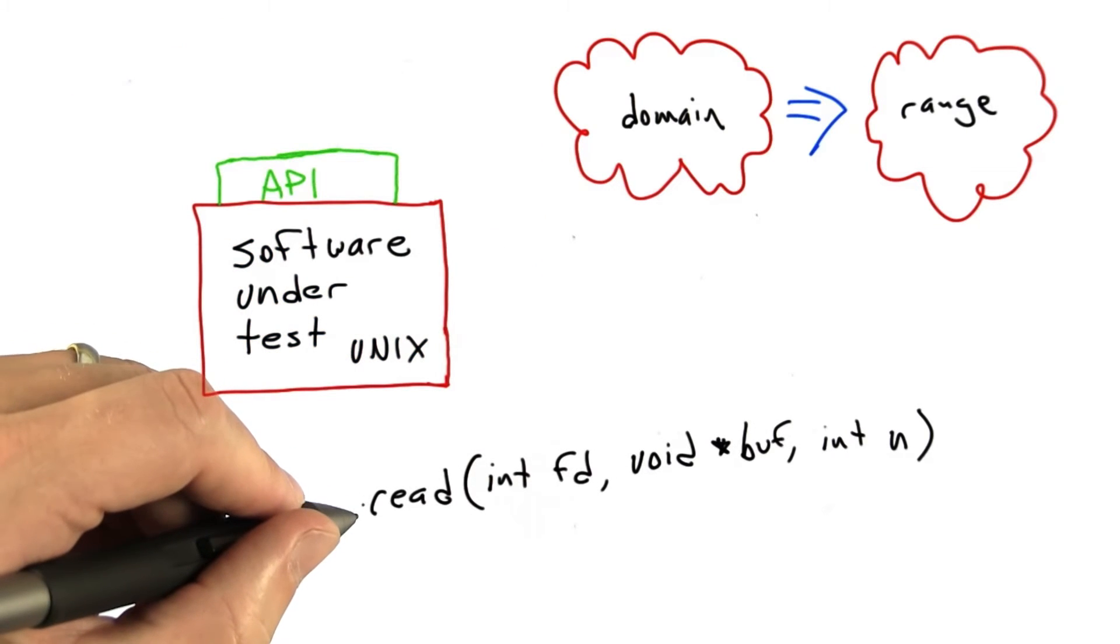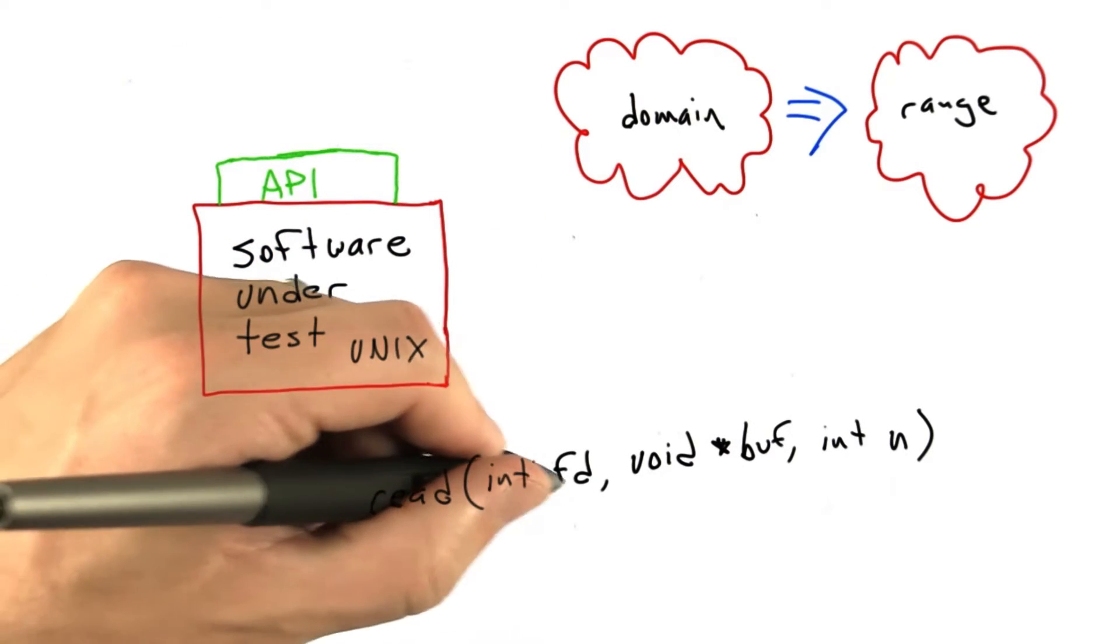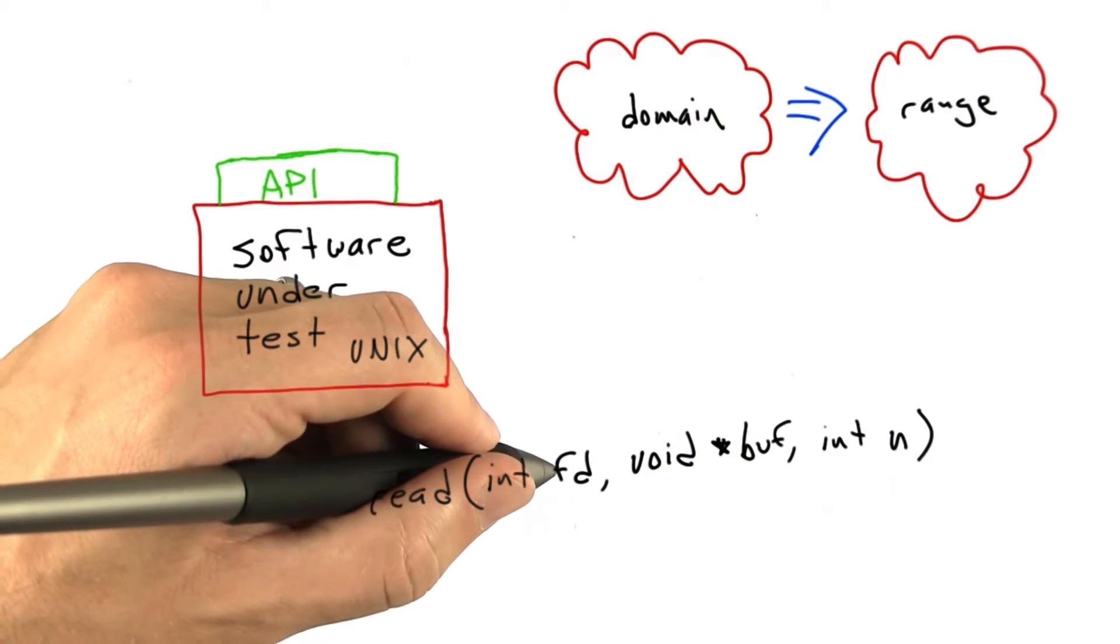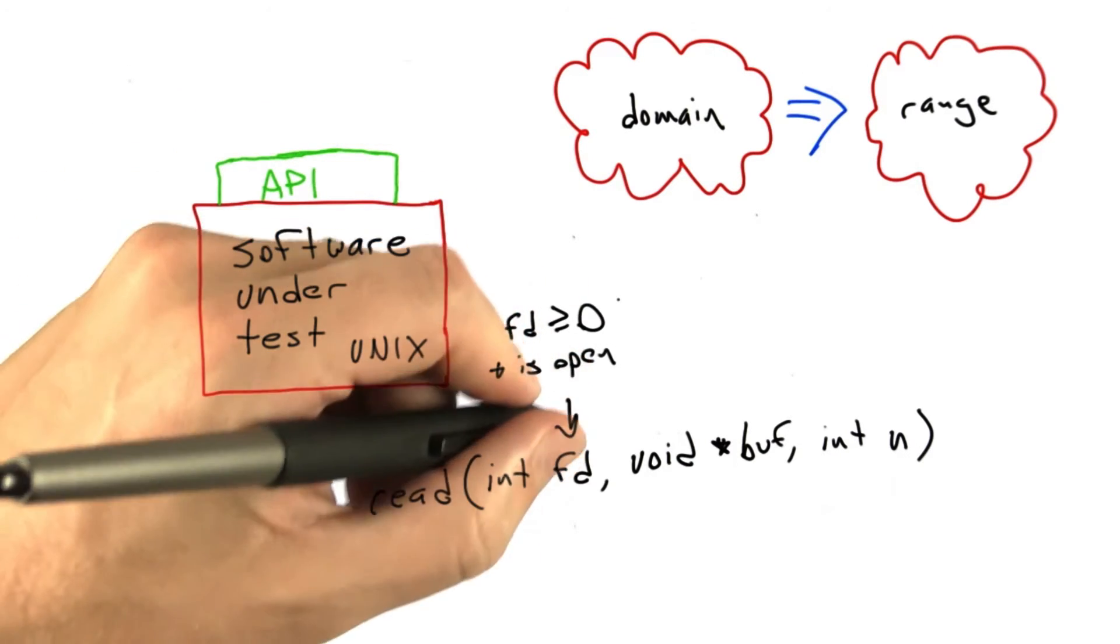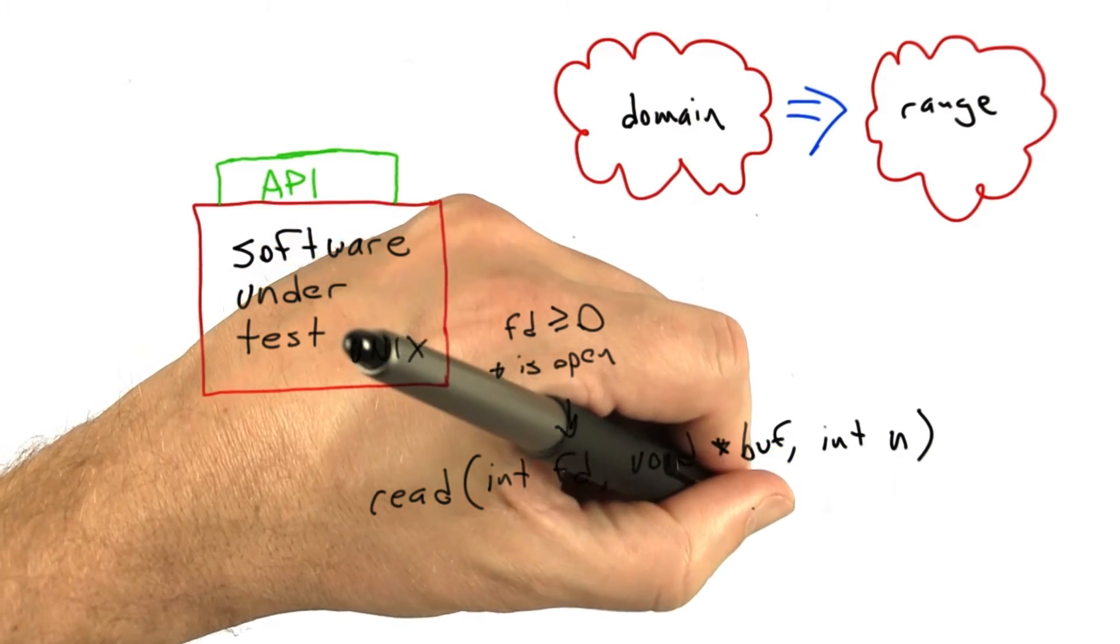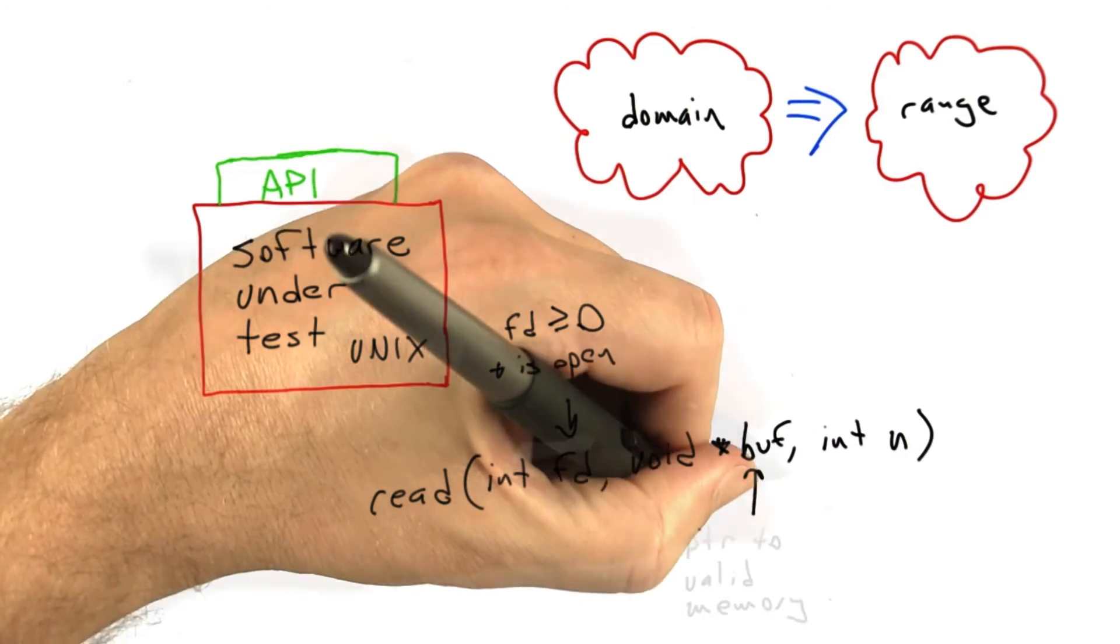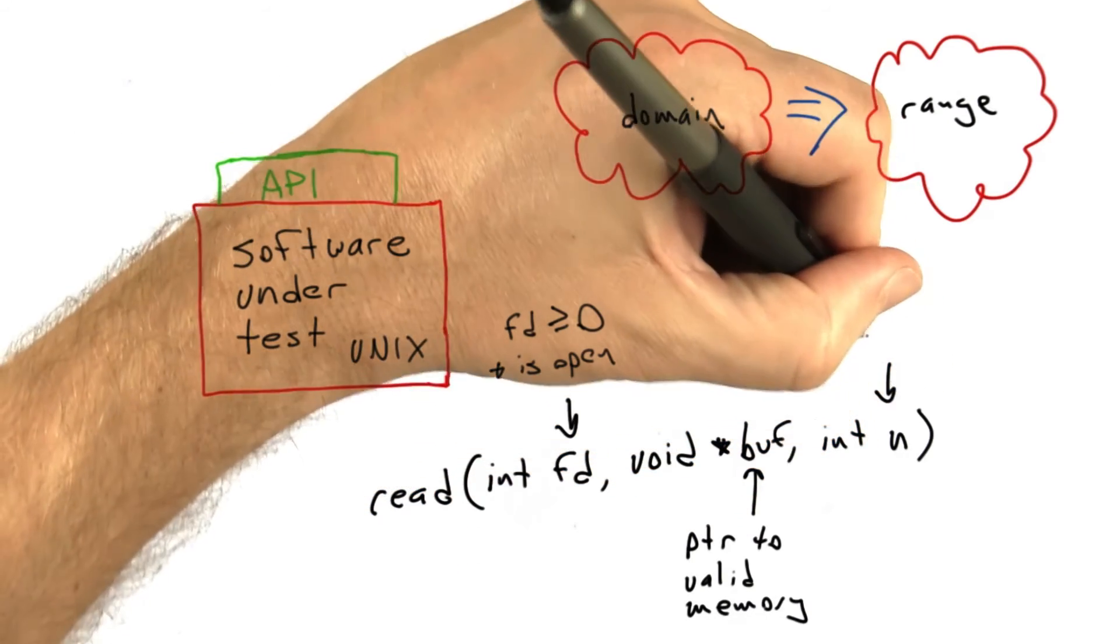And so the read call takes three parameters. It takes an integer called fd, which is just a small integer referencing a file that's already open. It takes a second parameter called buff, which is a pointer to a memory region, that is to say a valid memory region in the process's address space. And finally it takes a number of bytes.